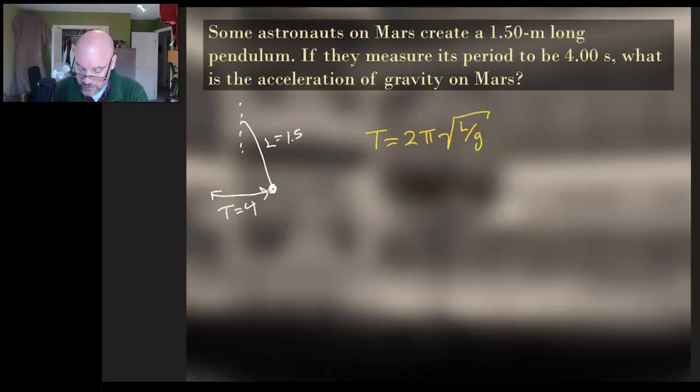And this is T equals 2 pi square root of L over G. Oh, do you see it? Do you see it now? There it is. There's our acceleration due to gravity. And so it doesn't matter what planet you're on. There it is.